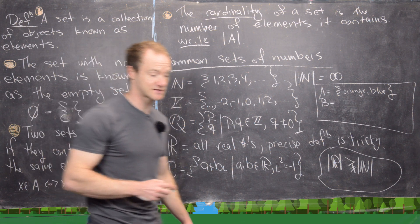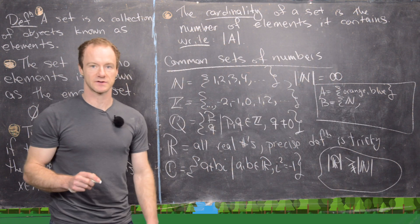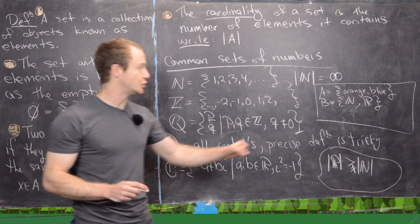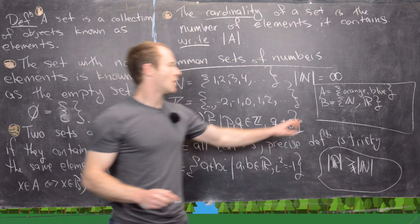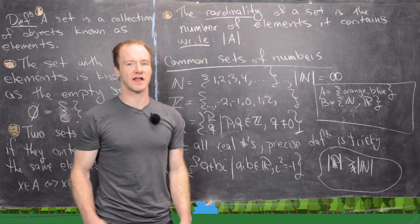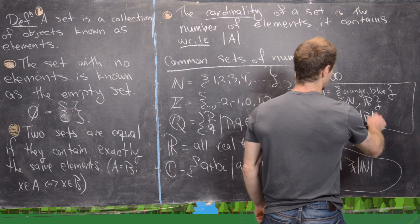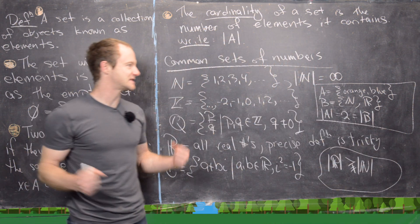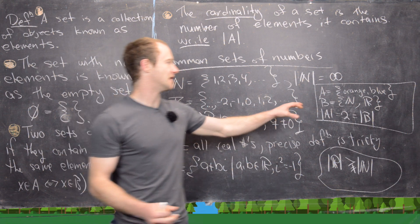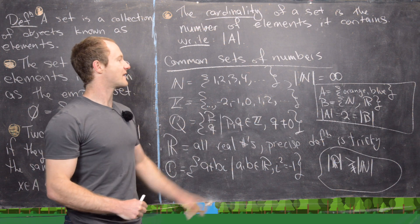Here's a trickier example: let B be the set containing the set of natural numbers and the set of real numbers. The number 2 is not an element of B — the only two elements of B are the entire set of natural numbers and the entire set of real numbers. So the cardinality of B is also two, just like A, even though their elements are completely different: A has colors, B has infinite sets.